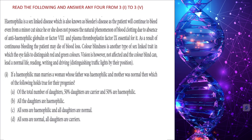Case study three: Hemophilia is a sex-linked disease, also known as bleeder's disease. The patient continues to bleed even from a minor cut because they do not possess the natural blood clotting mechanism, due to absence of anti-hemophilic globulin (Factor 8) and plasma thromboplastin (Factor 9). Continuous bleeding can lead to death from blood loss. Color blindness is another sex-linked trait where the eye fails to distinguish red and green colors, though vision is otherwise normal.